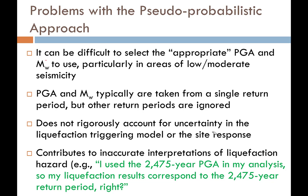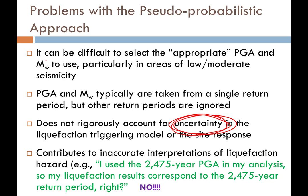And finally, perhaps most significantly, one of the most dangerous problems with the pseudo-probabilistic approach is that it contributes to an inaccurate interpretation of the liquefaction hazard. I often hear from engineers who apply this method: 'I used the 2,475-year PGA in my analysis, so my liquefaction results correspond to the 2,475-year liquefaction return period, right?' And the answer is wrong — it doesn't. Because all of the uncertainties that contribute to the liquefaction problem were not considered at all, and they contribute significantly to that return period.